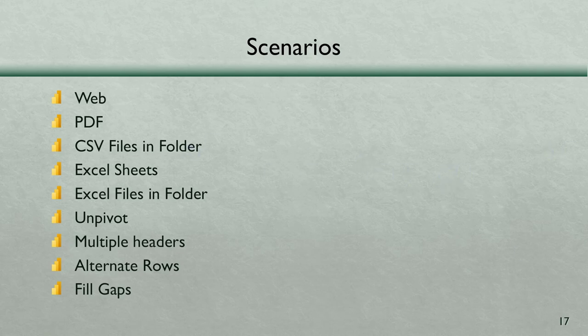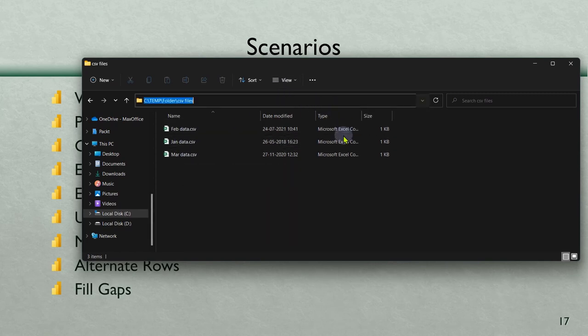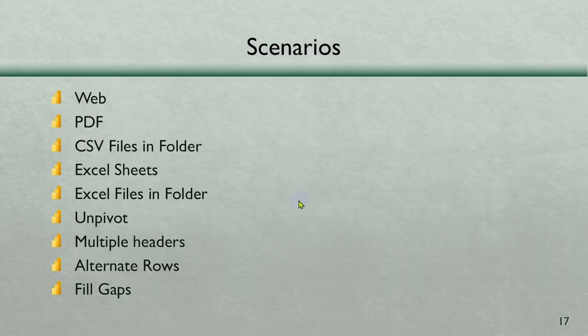Next, another very common thing: CSV files in a folder. I have a folder with multiple files - obviously the structure of the files has to be the same for all this to work. Structure means columns and data types have to be the same. I have a folder here, picking it up. I don't want to manually open and copy-paste data, which is what you would do otherwise, or write a macro or use a third-party add-in - all of that is not required any longer.